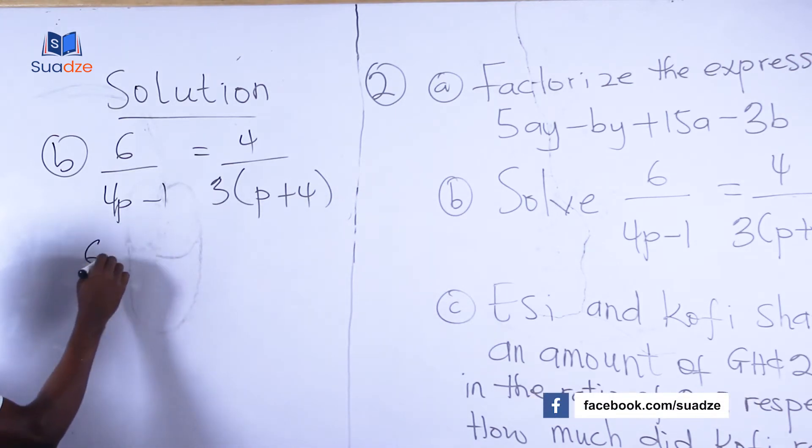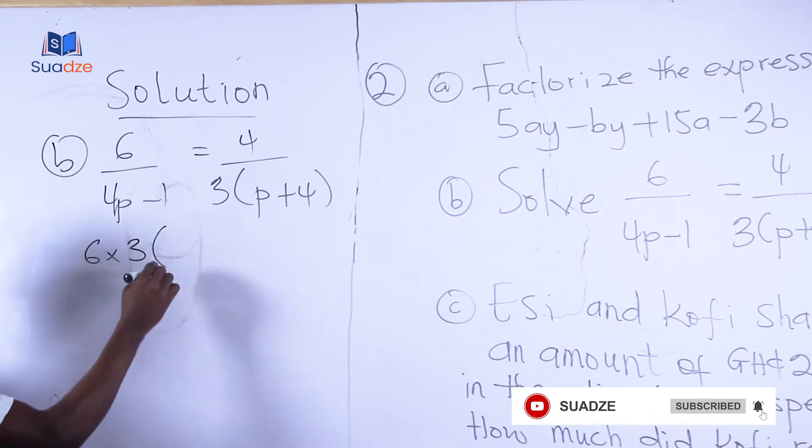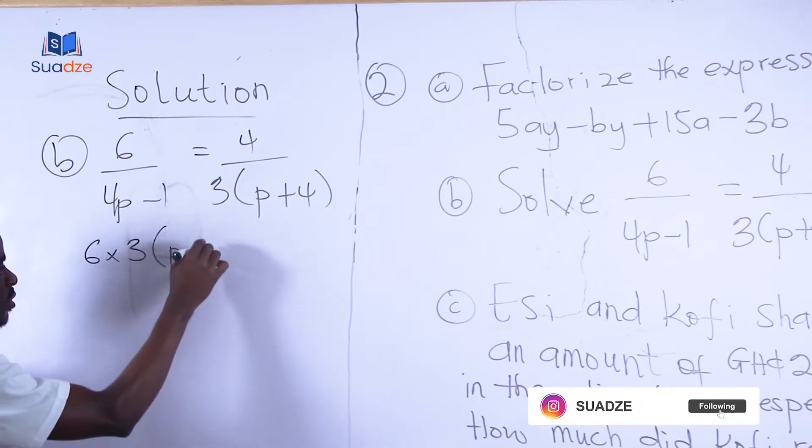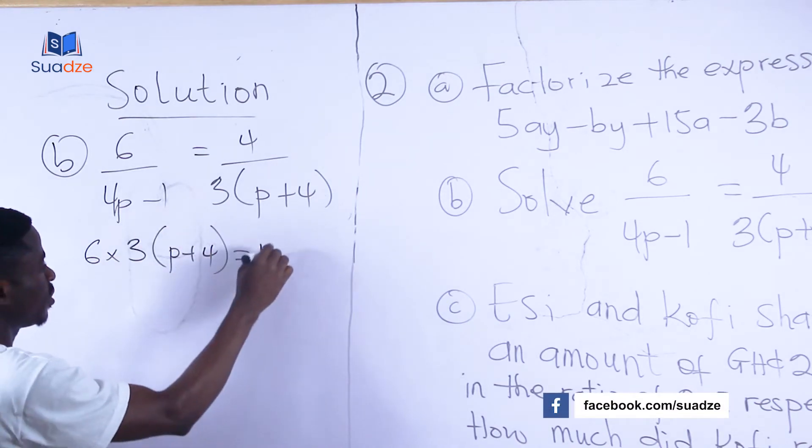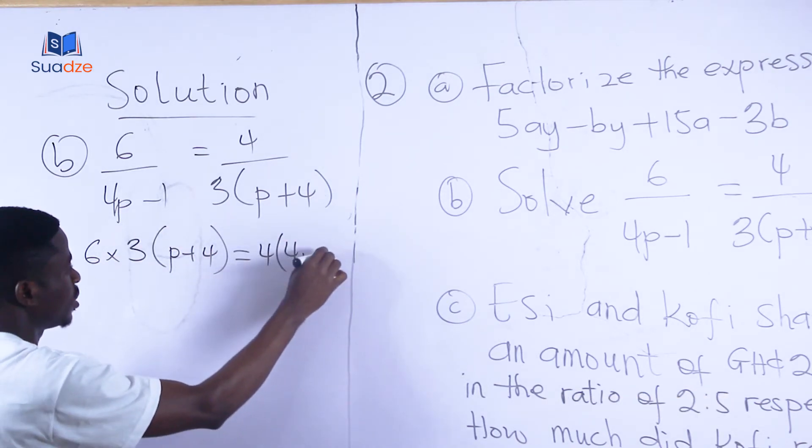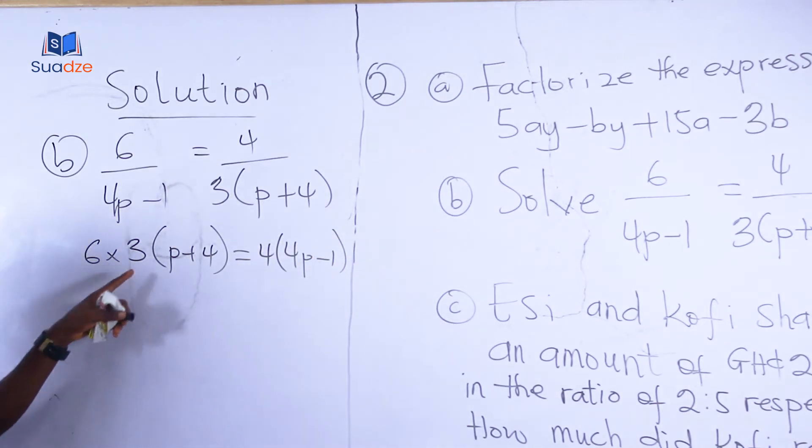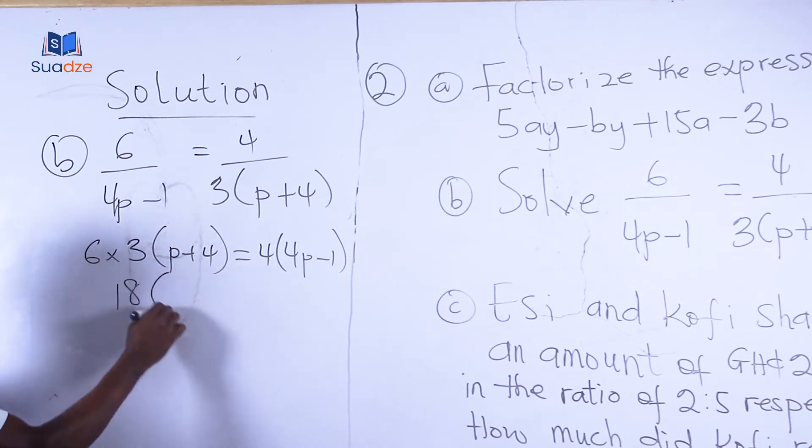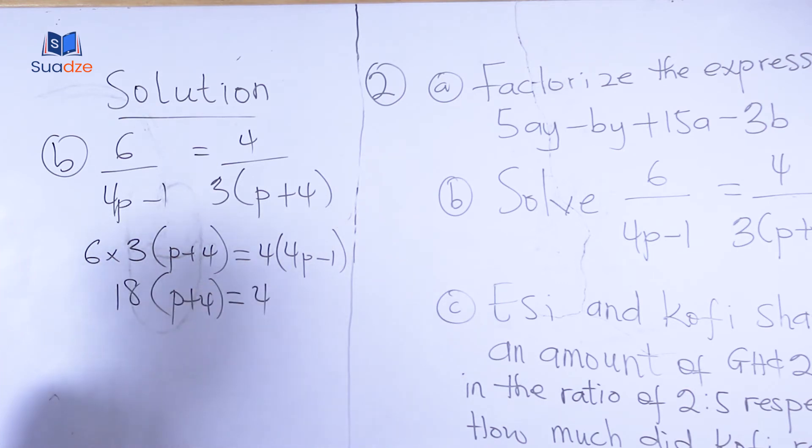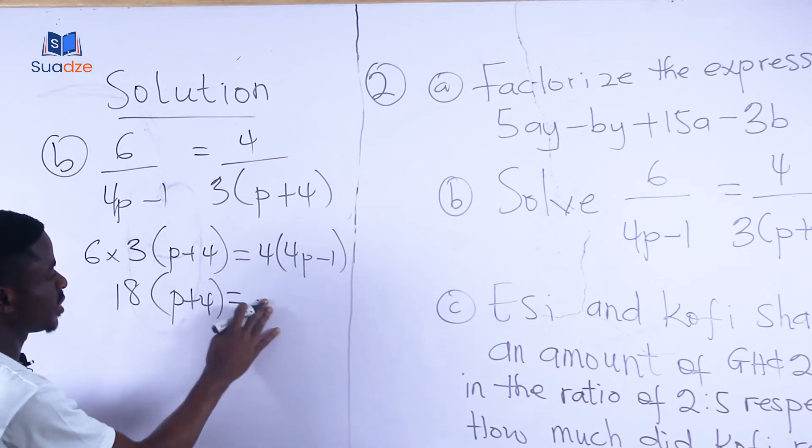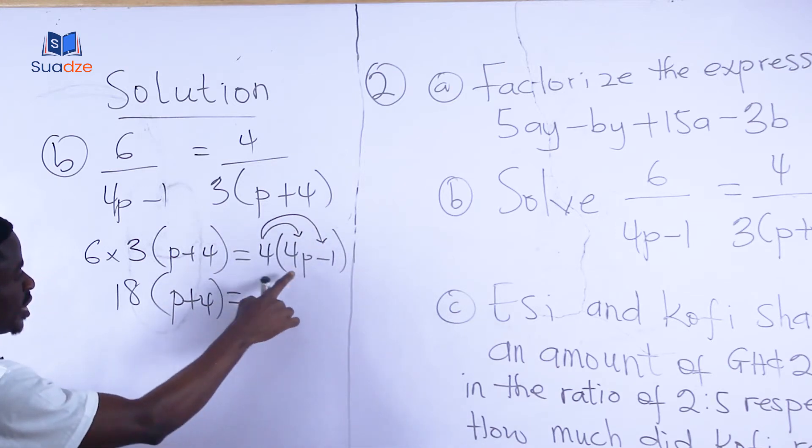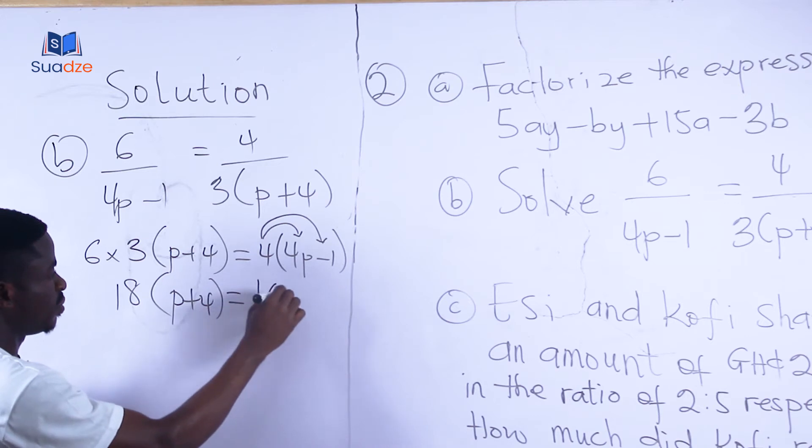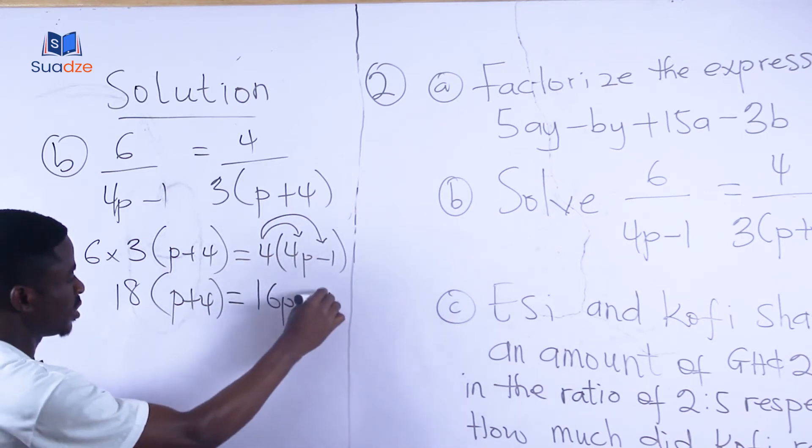So this is going to give us 6 multiplied by this, which is 3(p + 4) equals 4(4p - 1). So 6 times 3 is going to give us 18(p + 4) equals 4 times this. The 4 will multiply this at the same time, multiply the one here. So 4 times 4p will give us 16p minus 4 times 1 will give us 4.